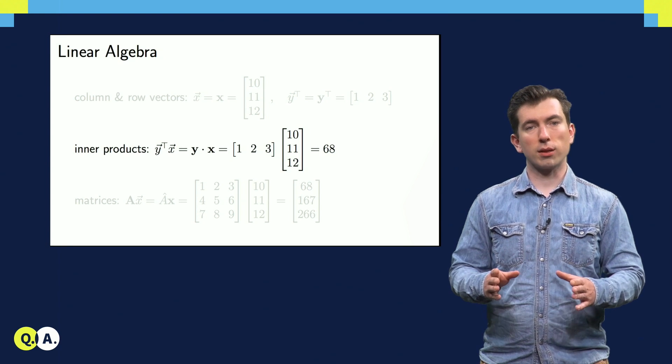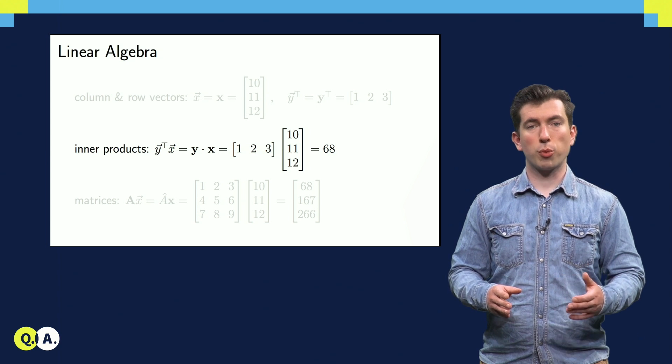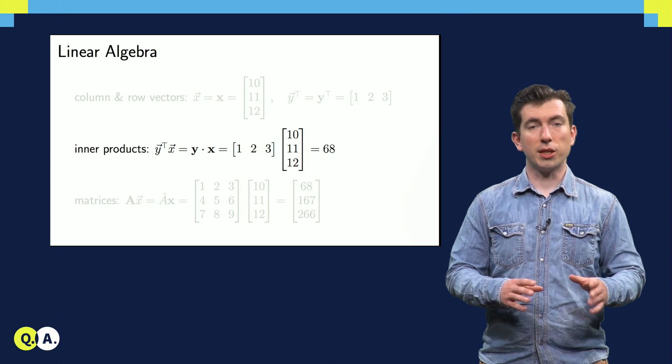We can calculate the inner product of two such vectors, either by transposing one of them and multiplying, or by writing the dot product explicitly. Either way, we get a scalar by taking the inner product of these two vectors.